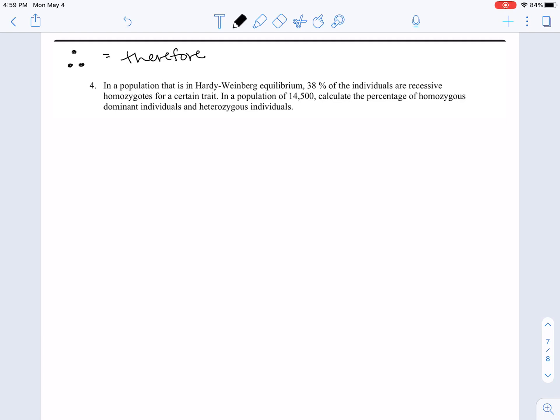It's like, oh, if Q equals 0.5, therefore P has to equal 0.5 because 0.5 plus 0.5 equals one. Cool. So in a population that is in Hardy-Weinberg equilibrium, 38% of the individuals are recessive homozygotes. Recessive homozygotes. What letter is that? Recessive homozygotes. Q squared. What is Q squared? 38%. So we know that 0.38 is equal to Q squared.